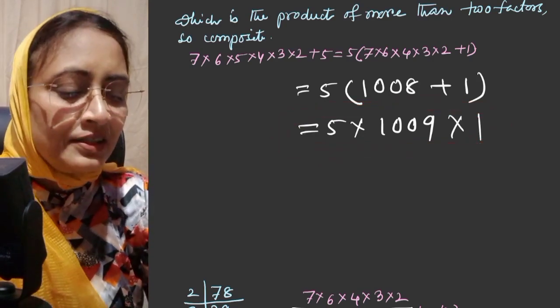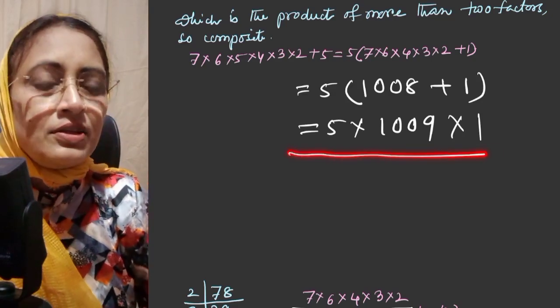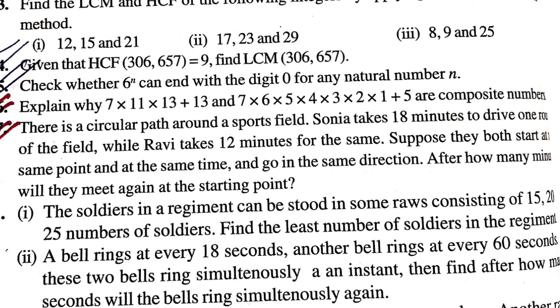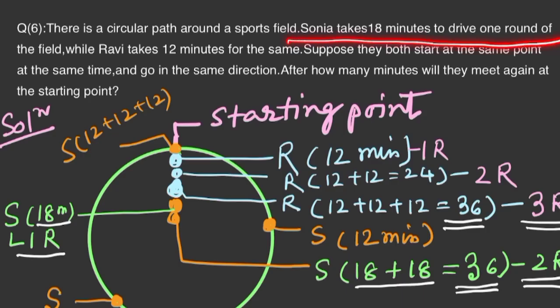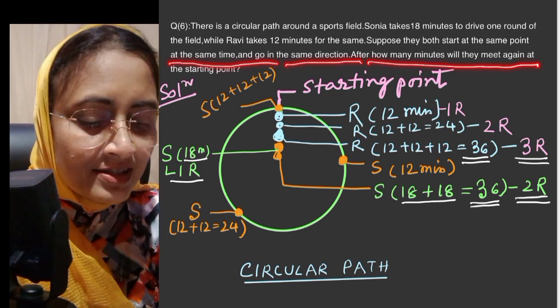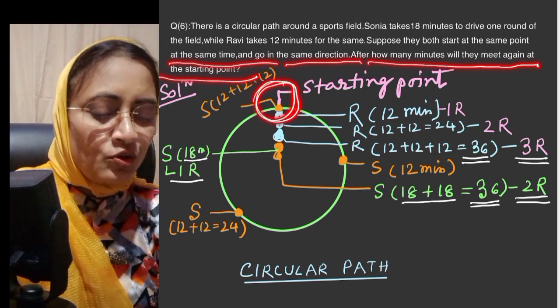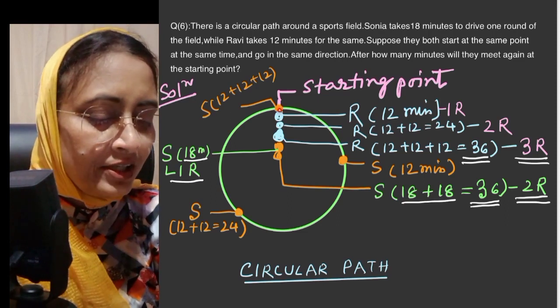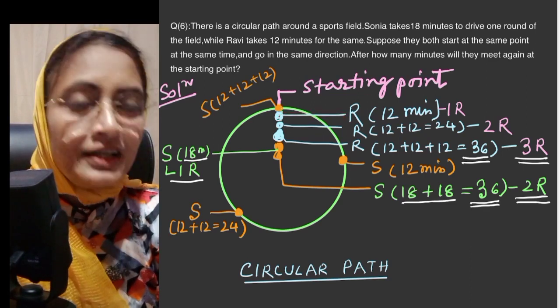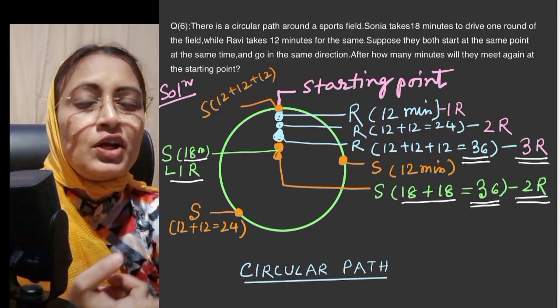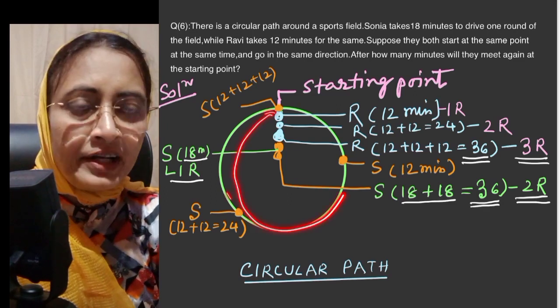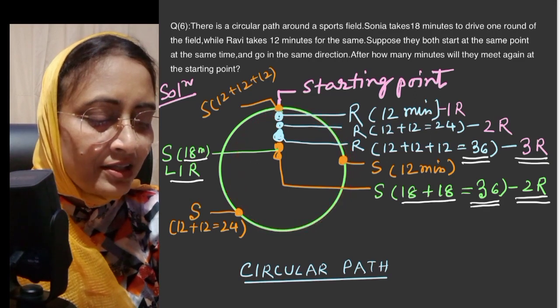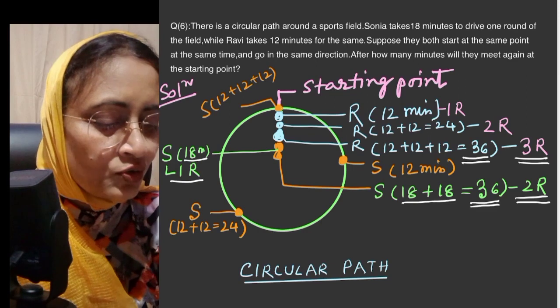Question: There is a circular path around a sports field. Sonia takes 18 minutes to drive one round of the field and Robi takes 12 minutes for the same. Suppose they both start at the same point at the same time and go in the same direction. After how many minutes will they meet again at the starting point? This is the starting point. Robi and Sonia start at the same time. After 12 minutes, Robi completes a round. Sonia is driving slower, behind Robi.